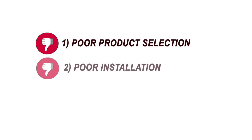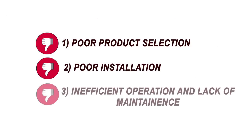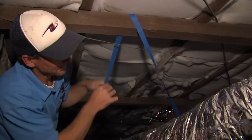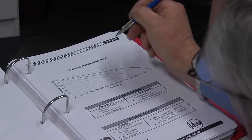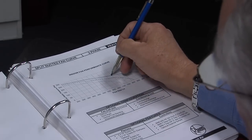One: poor product selection. Two: poor installation. And three: inefficient operation and lack of maintenance. If you're selling or installing air conditioners, you are able to influence these factors and help minimise running costs and emissions. This video outlines how.